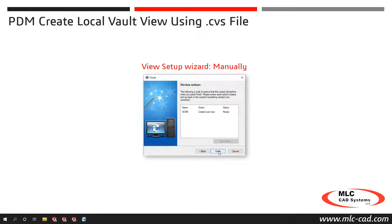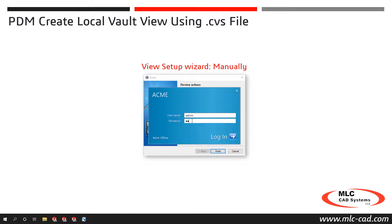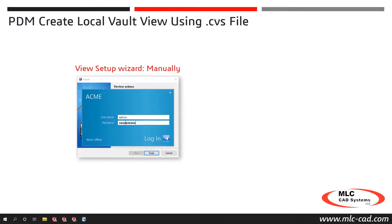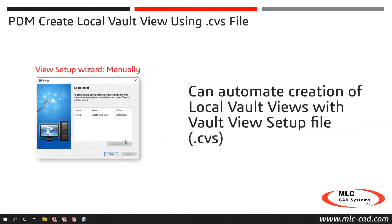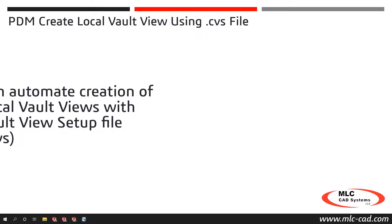Organizations with many users can save time by automating the creation of local vault views using the view setup wizard with special triggers to create a vault view setup file with extension CVS. Once distributed to client machines, users simply double-click the CVS file and the local vault view is created automatically.